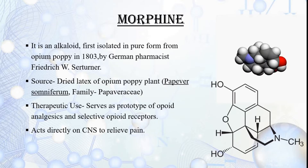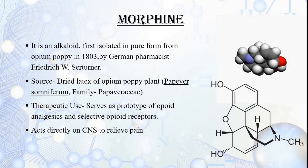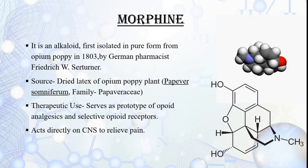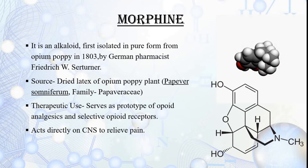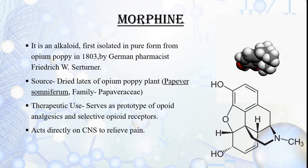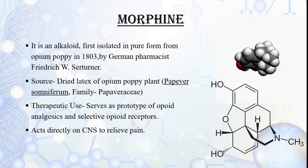Morphine is an alkaloid isolated in pure form from opium poppy. It acts directly on the central nervous system to decrease the feeling of pain, and is used to help relieve moderate to severe pain. It may be given for the control of severe post-operative pain, minor surgical procedures, or cardiac pain. Its oral dosage is 2 to 20 mg per ml.